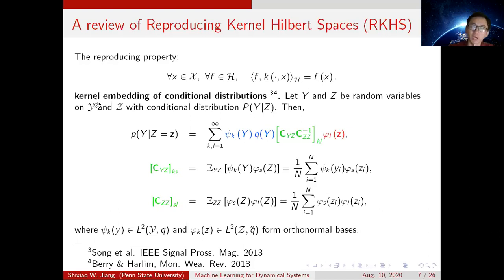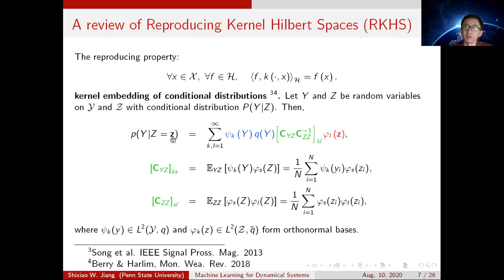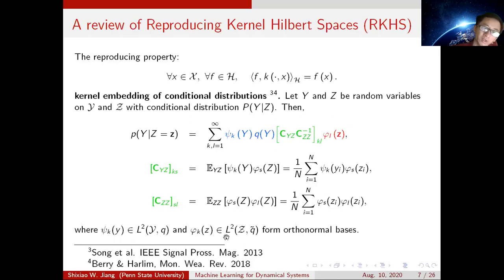We need to use the kernel embedding of conditional distributions. That means Y and Z are two random variables in spaces Y and Z. The conditional distribution P(Y|Z) can be expressed as a series. This can be treated as a generalization of a Fourier representation — K_Y is a complete basis in a weighted L2 space with weight Q, and K_Z is also a complete basis in a weighted L2 space with appropriate weight Q2. This green term can be treated as the Fourier coefficients.